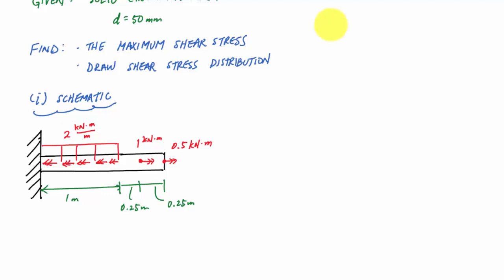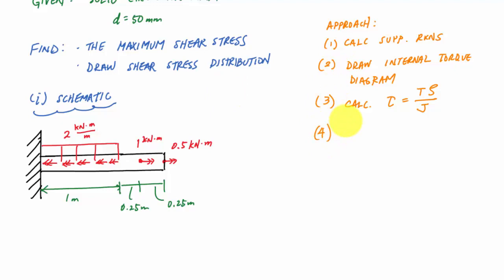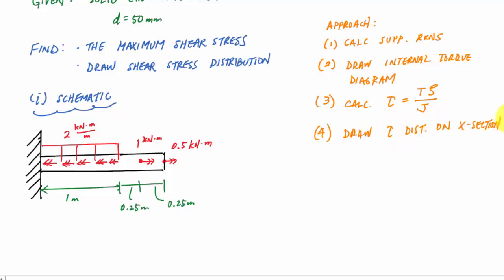The approach involves: first, calculate support reactions; second, find where the maximum internal torque occurs along the length of the rod, which may require drawing an internal torque diagram, especially given the distributed load; and third, once we identify that location, calculate shear stress using the torsion formula τ = Tρ/J. Finally, we can draw the shear stress distribution on the cross section.